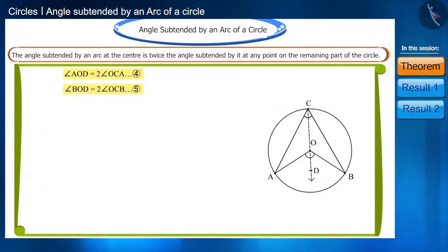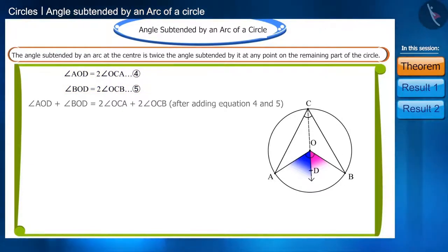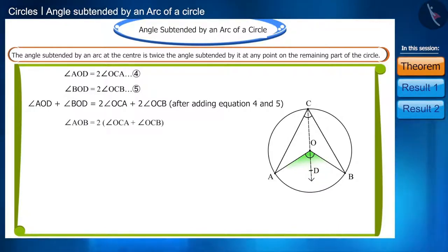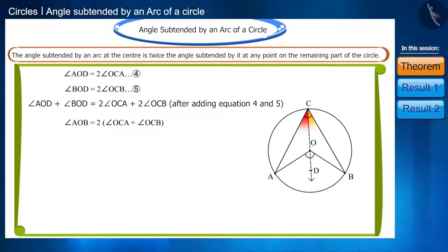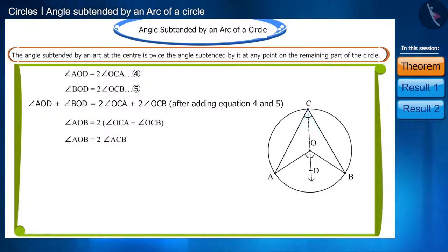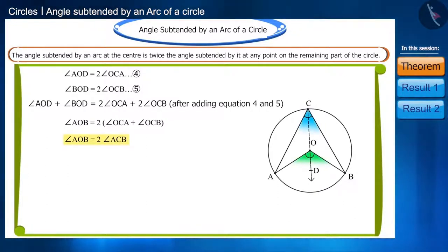Now adding equations 4 and 5: combining the angles AOD and BOD, we get angle AOB. By combining the angles OCA and OCB, the angle ACB is obtained. You can see that angle AOB is twice angle ACB.